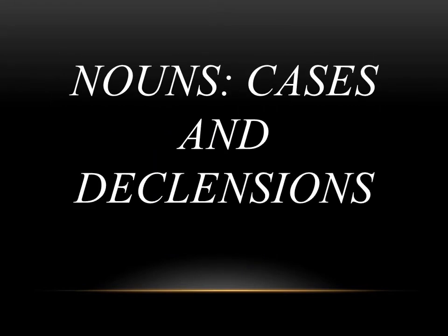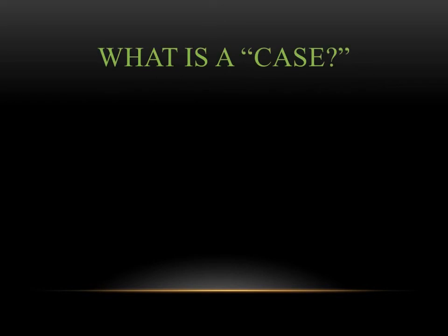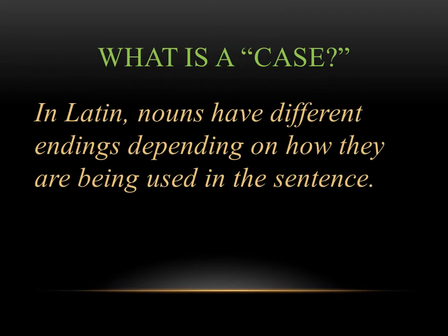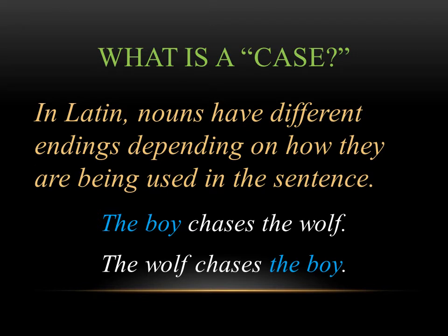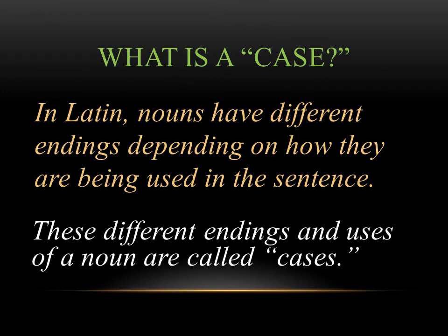The next idea in the grammar for this chapter is something called cases and declensions — two really important ideas that are the foundation for all of Latin. First, what is a case? In Latin, nouns have different endings depending on how they're being used in the sentence. For instance, if we take the phrase the boy chases the wolf versus the wolf chases the boy, we've changed the meaning of the sentence. In the first, the boy is the subject; in the second, the boy is the direct object. In Latin, we would have to change the ending, even though in English it stays exactly the same. These different endings and uses of a noun are what we call cases.